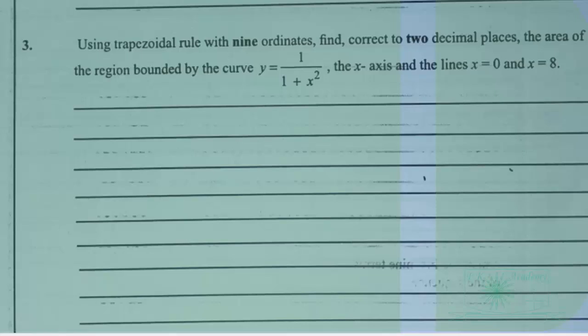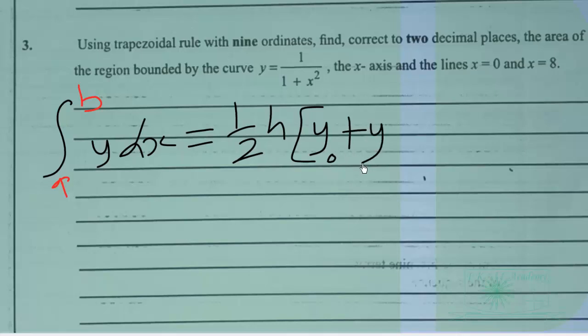Recall that the trapezoidal rule is given by integral of x equals a to x equals b of y dx. This is given by 1 over 2 times h into brackets, we have y naught plus y sub n.